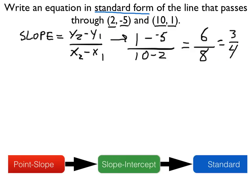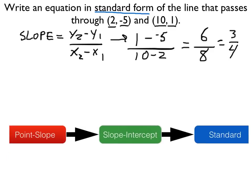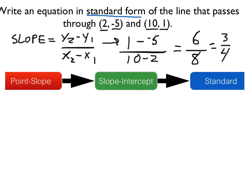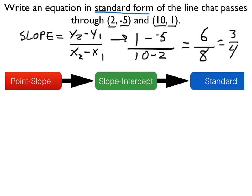And now we have slope positive three-fourths, and then we can pick either one of these two points to put it into point-slope form, which of course then we'll use to get slope-intercept form, which will then give us standard form. So for point-slope form, let's use this first point two, negative five. So put that into point-slope form.